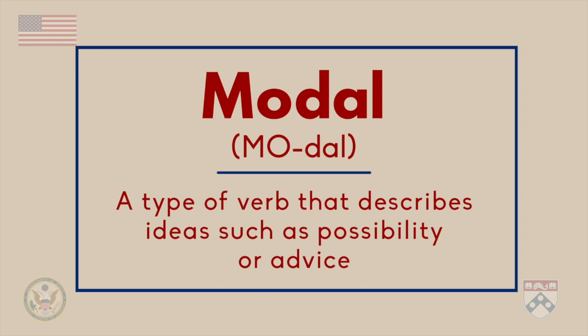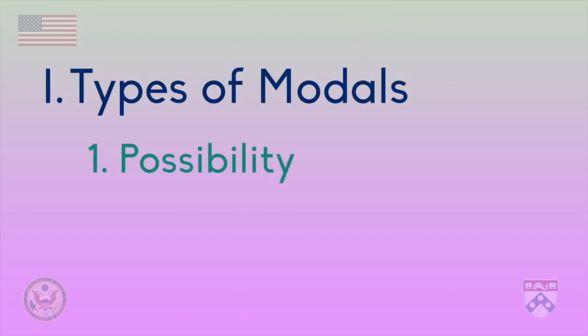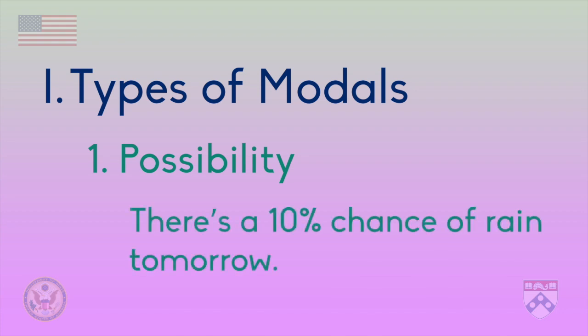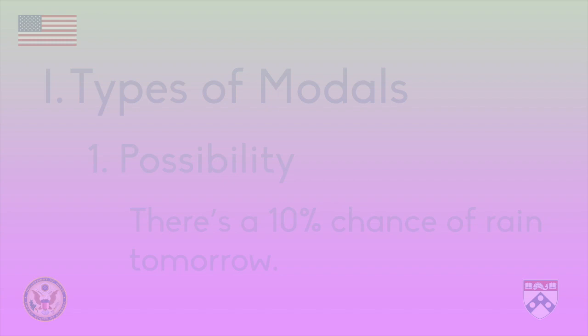Let's look at two common types of modal. First, possibility means how likely something is, such as when we talk about the weather and say there's a 10% chance of rain tomorrow. We could say the possibility for rain is 10%. Modals that express possibility do not all have the same strength or express the same chance that something is going to happen.